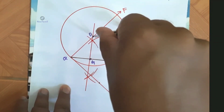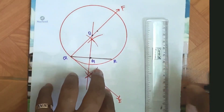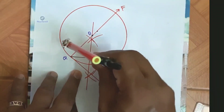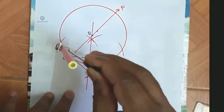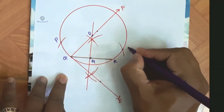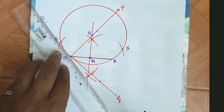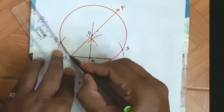The circle is now completed. Step six: the median PG from P to QR is 4.4 cm, so take 4.4 cm in the compass. With G as center and 4.4 cm radius, draw arcs on the circumference of the circle on both sides, marking the points as P and S. Step seven: join PQ and PR to complete triangle PQR.